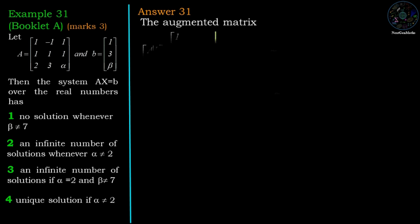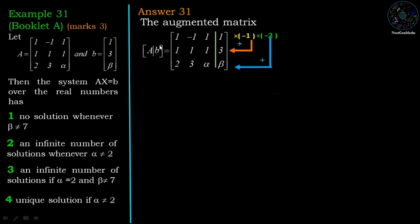For the given problem, we form the augmented matrix [A|B]: [1, -1, 1, 1; 1, 1, 1, 3; 2, 3, alpha, beta]. We apply row operations to convert it to row echelon form. First, we multiply the first row by -1 and add to the second row, and multiply the first row by -2 and add to the third row, making the entries in the first column below the pivot equal to zero.